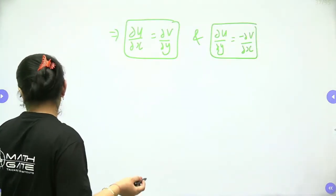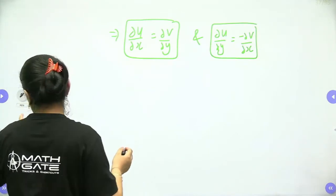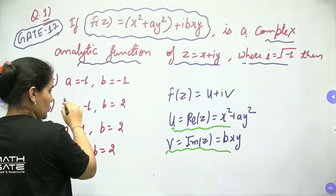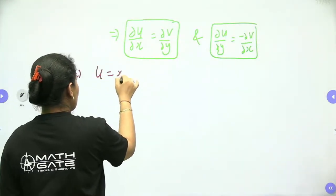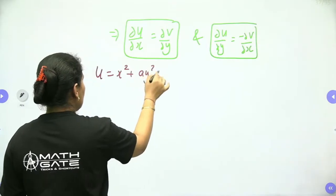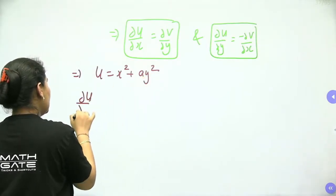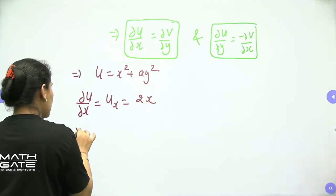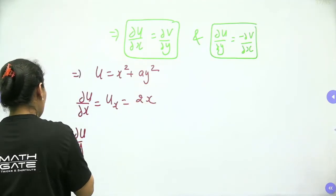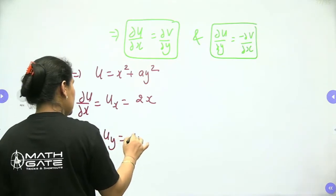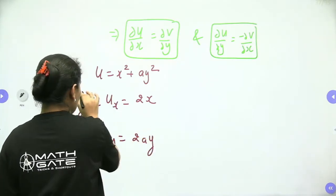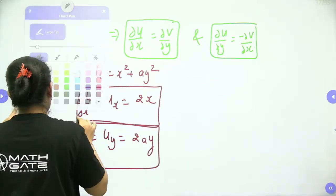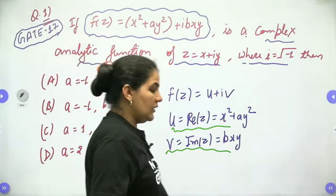For u equals x² + ay²: the partial derivative with respect to x gives u_x equals 2x, and the partial derivative with respect to y gives u_y equals 2ay.